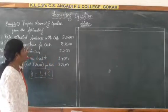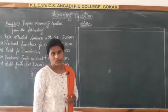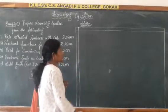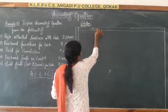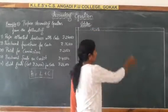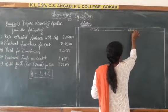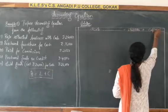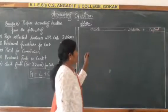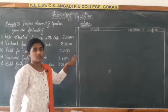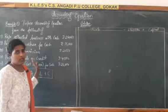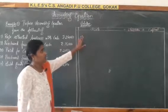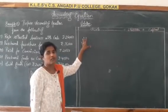Let us see how this problem is to be solved and how to prepare the accounting equation. As per the formula, with this simple format you can prepare it. First, when preparing the accounting equation, you have to observe the example and identify how many items are related to assets — because if you recognize the asset items, it is easy to write in a systematic way.